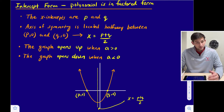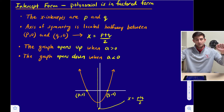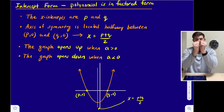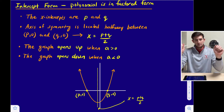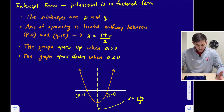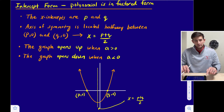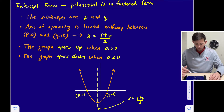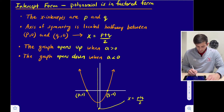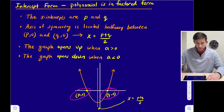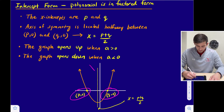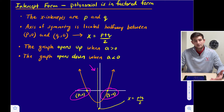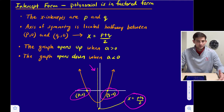The axis of symmetry is located halfway between p and q, because if those are both x-intercepts, they are the exact same distance away from the axis of symmetry since both sides of our parabola are symmetrical. And 'a' is going to tell us if the graph opens up or down — a negative value for 'a' means the graph opens down, a positive value means it opens up. In our diagram, the intercepts are at p,0 and q,0, and we get the axis of symmetry by doing (p + q) / 2 — it's the vertical dashed line cutting right through the vertex, halfway between the two x-intercepts.